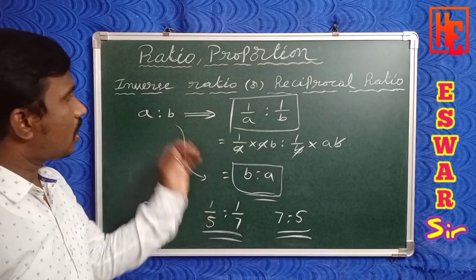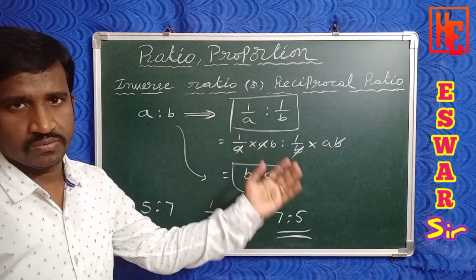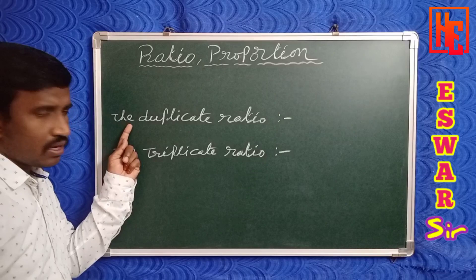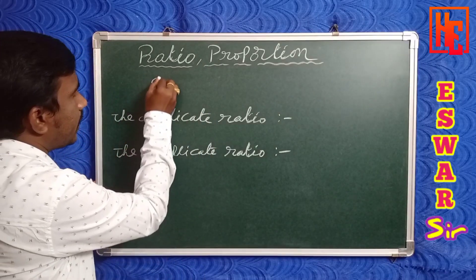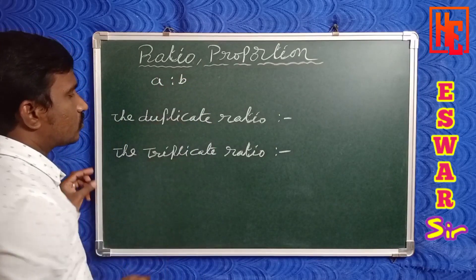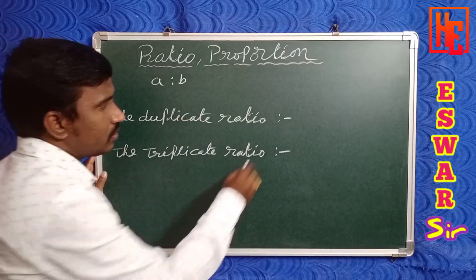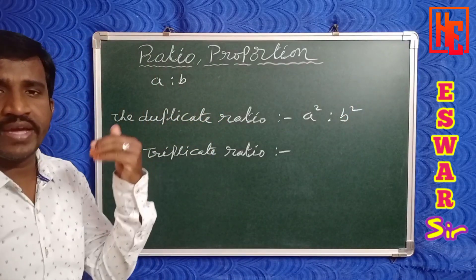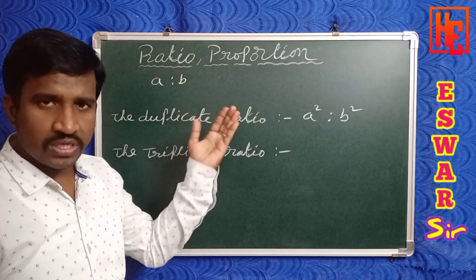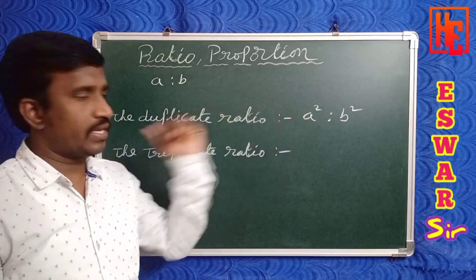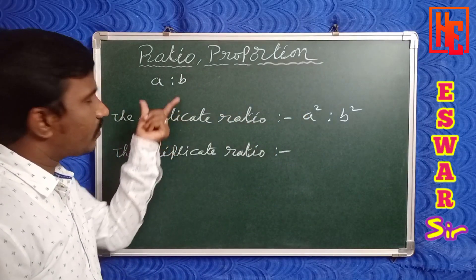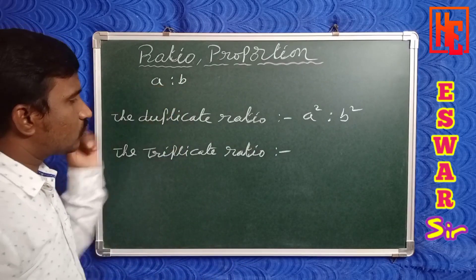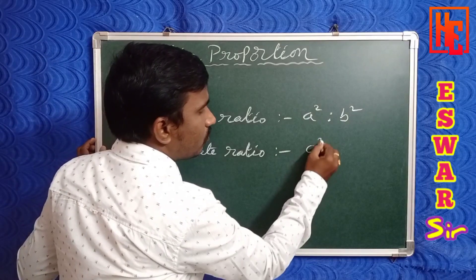Now, the duplicate ratio of a is to b: duplicate ratio means write as a squared is to b squared — square each number in the ratio. The duplicate ratio is the square of the given ratio. The triplicate ratio of a is to b means a cubed is to b cubed.